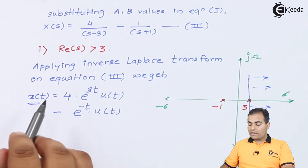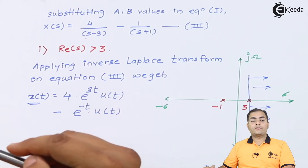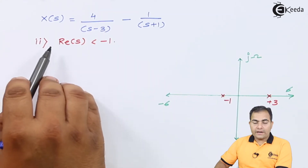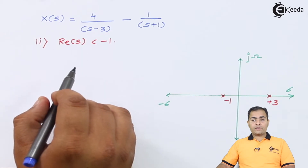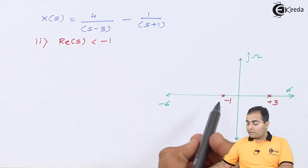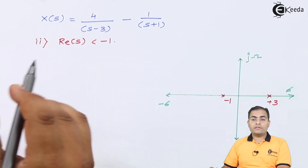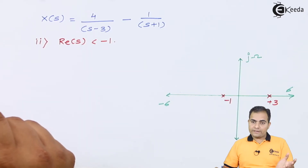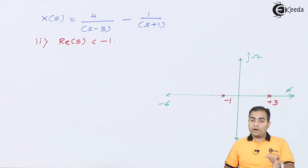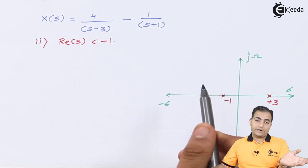So for the right-handed sided ROC, x(t) = 4e^(3t)u(t) - e^(-t)u(t). Moving on to ROC 2: Re(s) < -1. This means the ROC is on the left-hand side of s = -1, so this is a left-handed sided ROC. According to the properties of ROC, the ROC is marked on the left-hand side of the leftmost pole, which is s = -1.